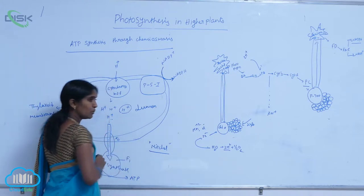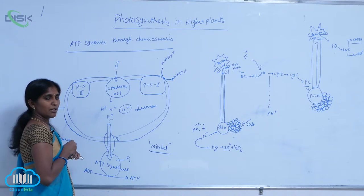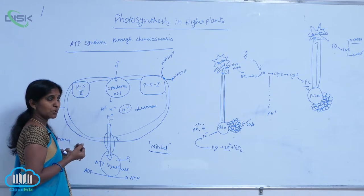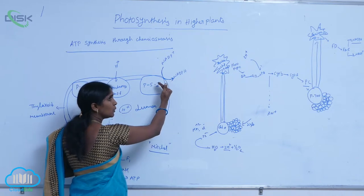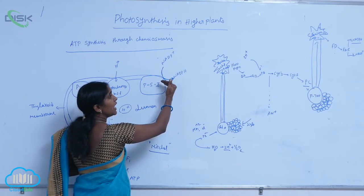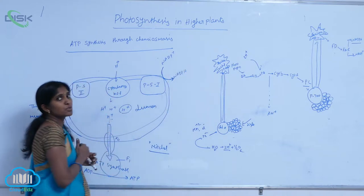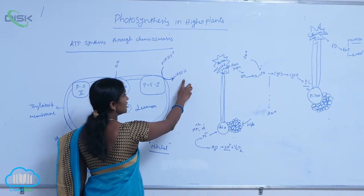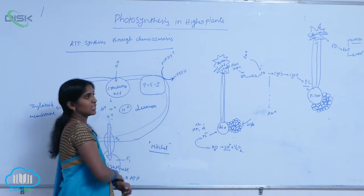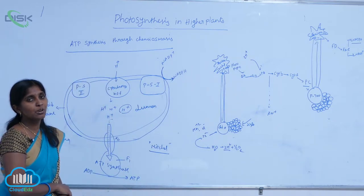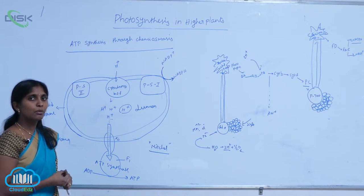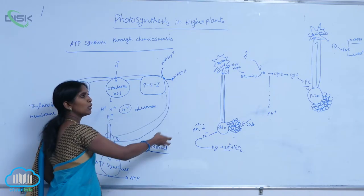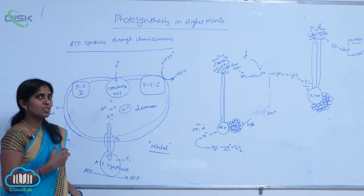In the stroma, during non-cyclic photophosphorylation, NADPH is produced. NADP is reduced to NADPH using H+ ions, meaning the reduction of NADPH is conducted by taking protons from the stroma. This leads to a reduction in the number of protons available in the stroma.